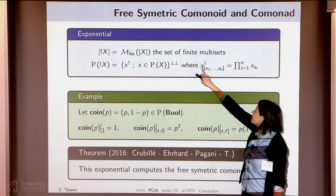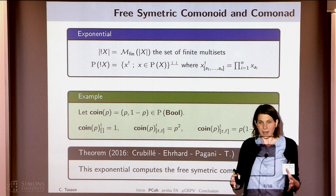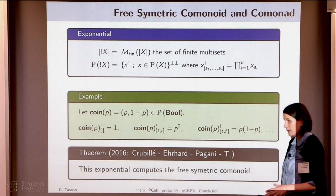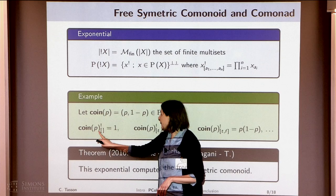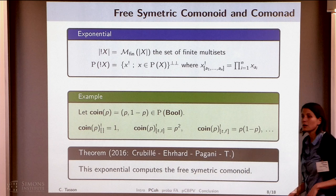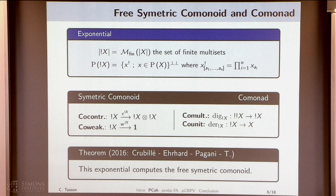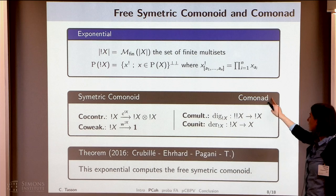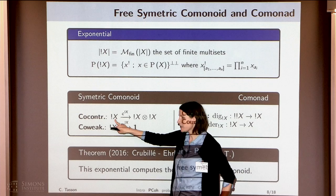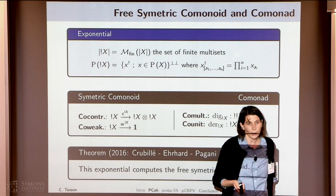For instance, if I have a coin p, which gives true with probability p and false with probability one minus p, and I have a bag of such coins, I will get no coins with probability one if I take none. And if I take two, I will get twice true with probability p multiplied by p. On this exponential, we can construct a comonad whose components give, for each x, a symmetric comonoidal structure — a co-contraction allowing duplication and a co-weakening allowing erasure.